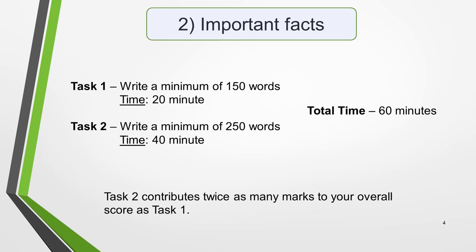Now for some important facts. For task 1 you should write a minimum of 150 words. The time allowed for this is around 20 minutes. And for task 2 you should write a minimum of 250 words in a time of about 40 minutes. This gives a total time limit for the test of 60 minutes or 1 hour. It's also important to know that task 2 contributes twice as many marks to your overall score as task 1.